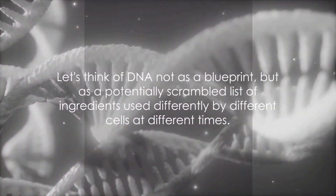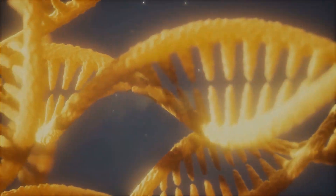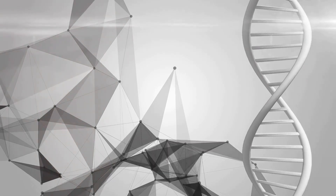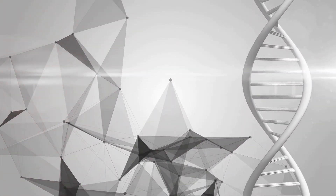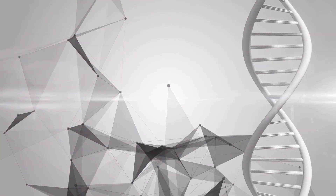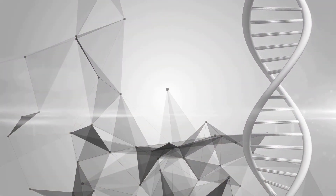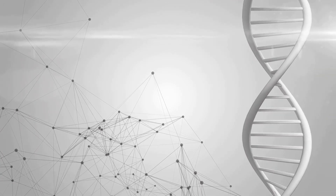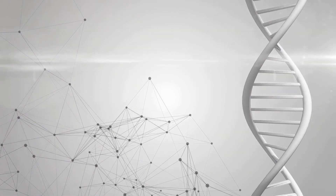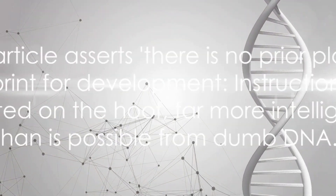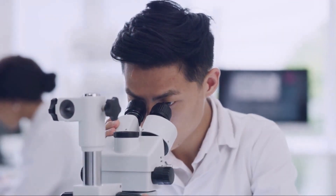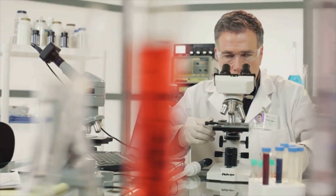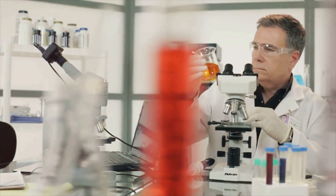This idea is echoed in a 2019 article titled "It's the End of the Gene as We Know It," which asserts: "There is no prior plan or blueprint for development. Instructions are created on the hoof, far more intelligently than is possible from dumb DNA." In 2020, Antony Jose, associate professor of cell biology and molecular genetics at the University of Maryland, further supported this notion, stating in his article "DNA may not be life's instruction book — just a jumbled list of ingredients" that DNA cannot be seen as the blueprint for life, but is at best an overlapping and potentially scrambled list of ingredients used differently by different cells at different times.